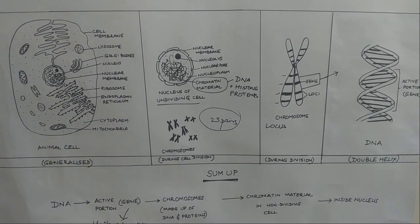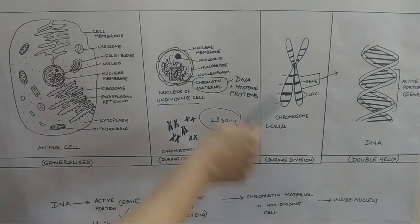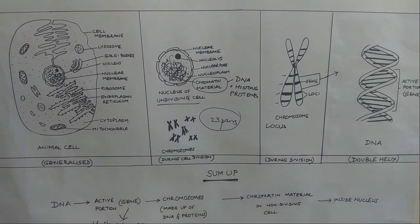It is the genes which transfer the characteristics from parents to offspring during reproduction. Genes are present in linear order on chromosome. Chromosome is made up of DNA and histone proteins and these are visible during cell division. When the cell is not dividing, the chromosomes are present in the form of an entangled mass which is known as chromatin material. And this chromatin material is present inside the nucleus.